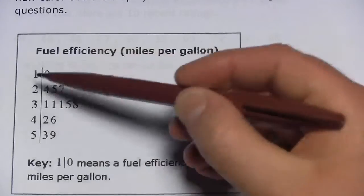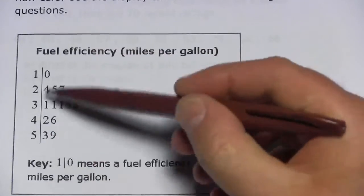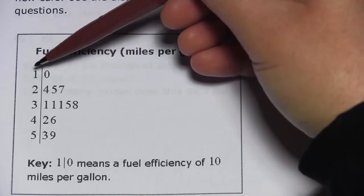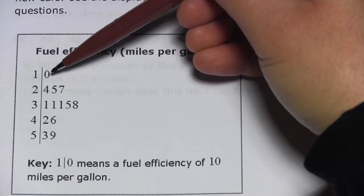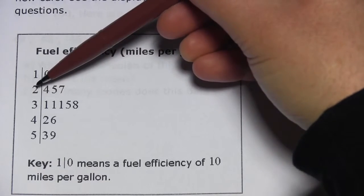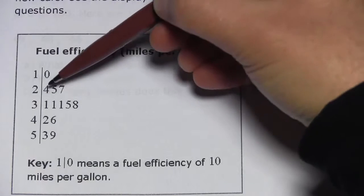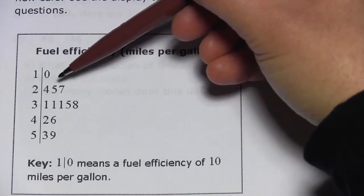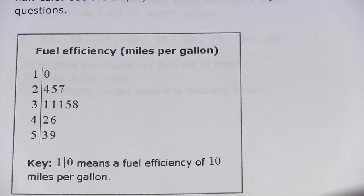To the left of that line, these are all the tens' digits, and then these represent the ones' digits. So you'd read this first line as a 10 with a zero after it, or a one with a zero after it, that would be 10. This one, there's a 2 for 20, but there's a 4, 5, and 7. And that means there are three numbers there, 24, 25, and 27, and so on.